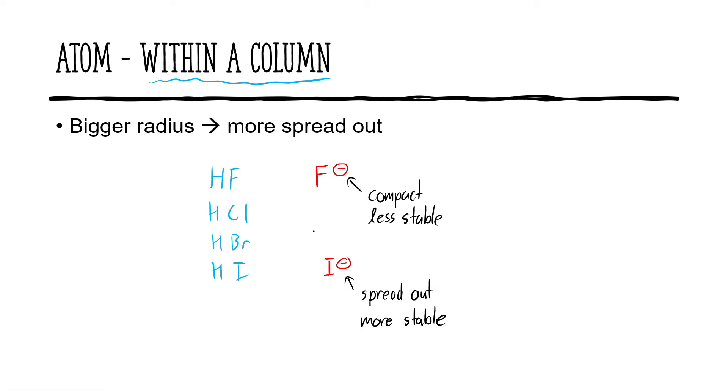The more stable the conjugate base, the better the acid. And what that means is that HI is the best acid on this list.